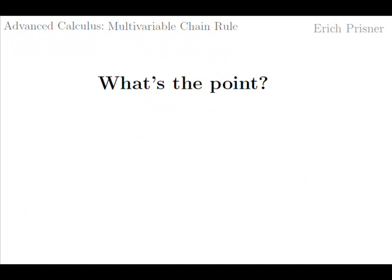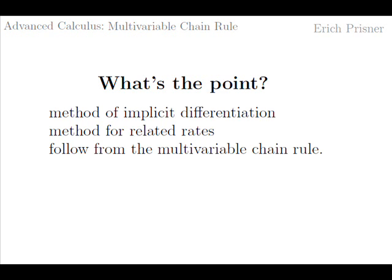So what's the point of the multivariable chain rule if we can differentiate the composed function directly? The point is that both implicit differentiation and the method for related rates follow from the multivariable chain rule.